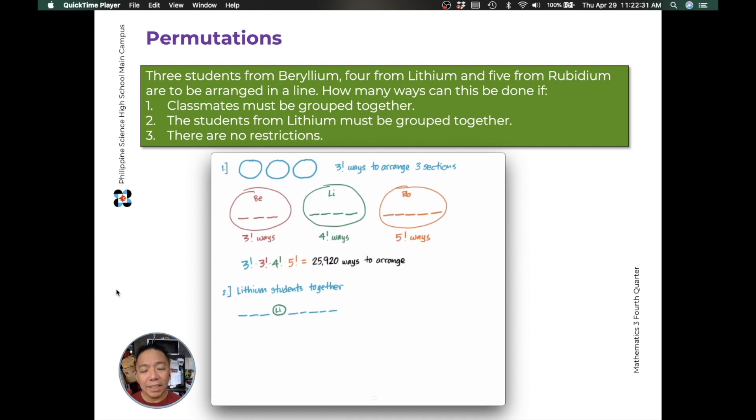The students are individual objects. The lithium group, we'll treat it as one individual object. So we'll consider our 5 students from rubidium, our 3 students from beryllium, and the whole lithium group as our individual objects to arrange in a line. Then we'll have 9 objects to arrange. In the figure, we're treating lithium as a single student or a single object. In this case, we'll have 9 factorial ways of arranging our 9 objects in a line.